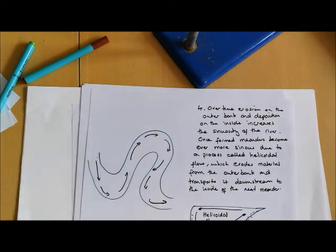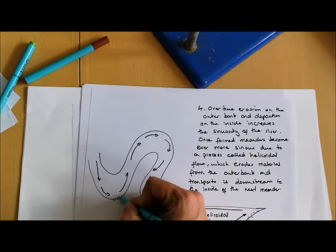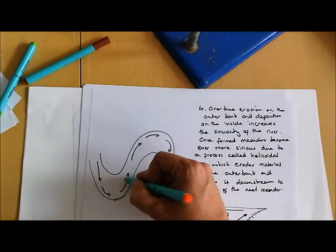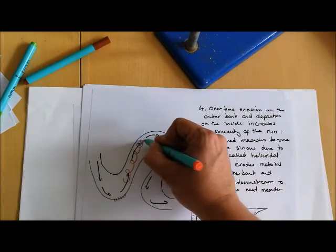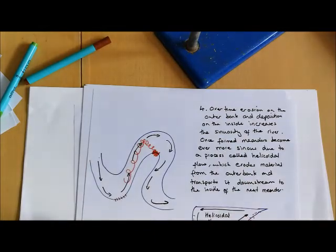Now, over time, meander bends become ever more sinuous due to a process called helicoidal flow. What this helicoidal flow does is it takes material from the outside of the bend and transports it downstream to the inside of the next bend. If we take this series of meanders here, if we've got material being eroded from that river cliff, that outer bend here, that material is then transported in like a corkscrew motion to the inside of this meander bend here.